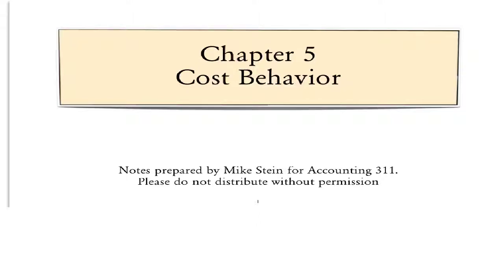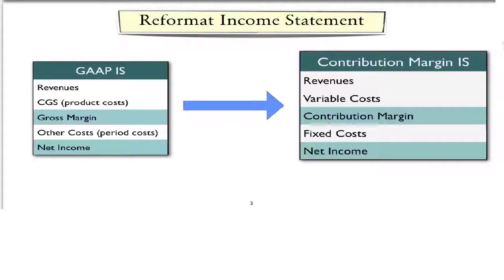This screencast is a short introduction to Chapter 5, Cost Behavior. In order to better understand cost behavior, we frequently reformat a GAAP income statement in terms of a variable costing or contribution margin type income statement.